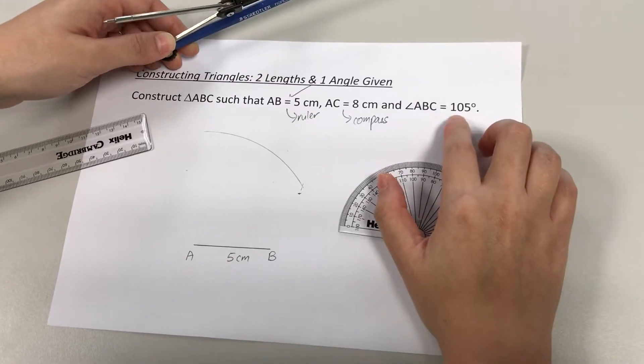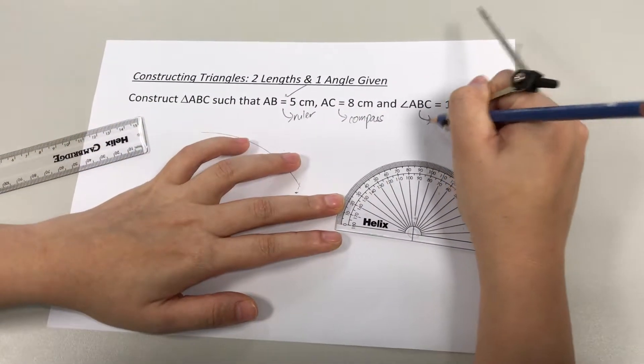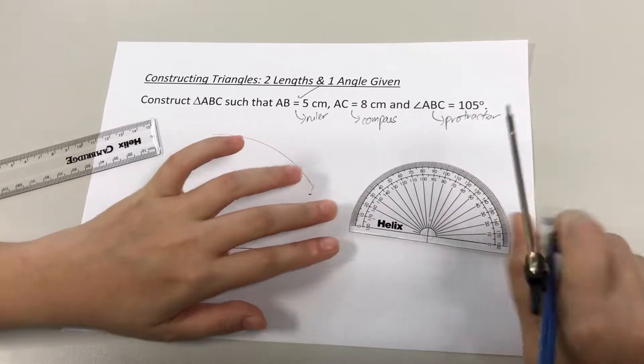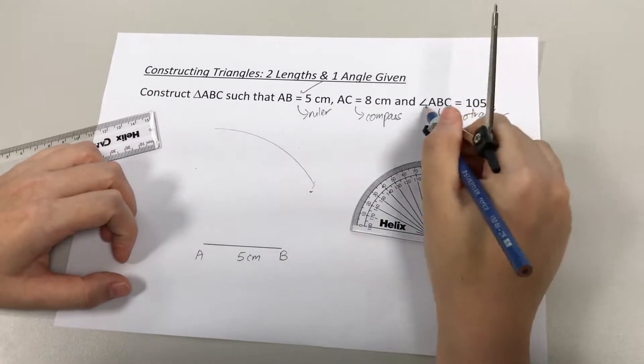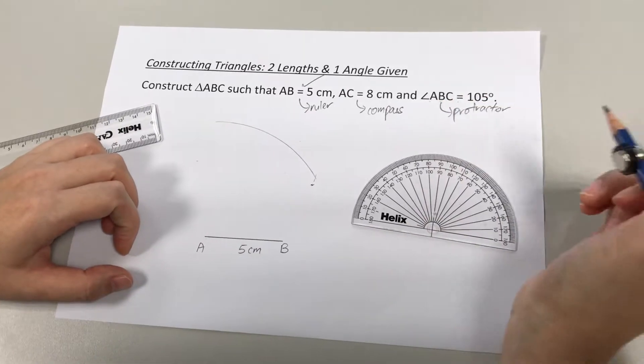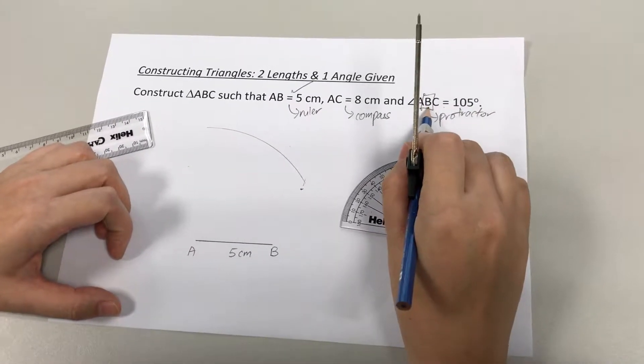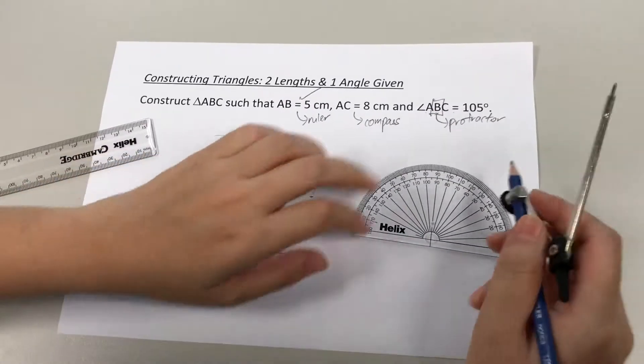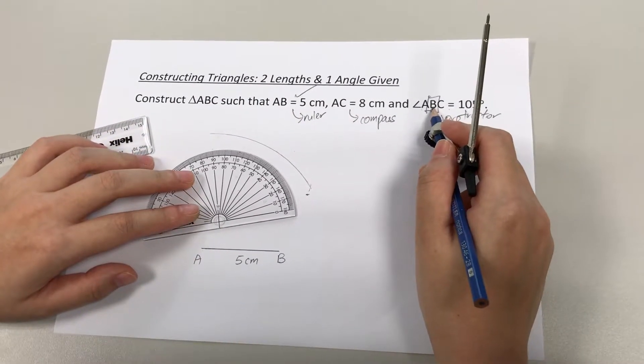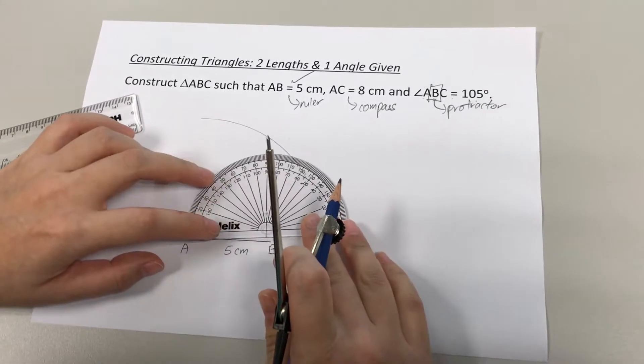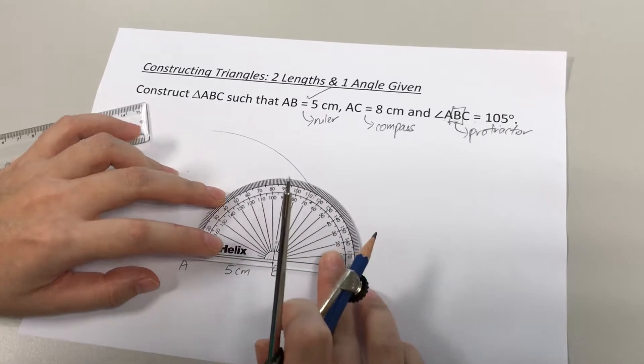It's important to note that whenever you're given an angle, you have to use your protractor to draw the angle out. In this case, when you see angle ABC, it refers to the angle at the middle which is B. So it means that at point B, the angle is supposed to be 105 degrees. I'm going to place my protractor at point B.